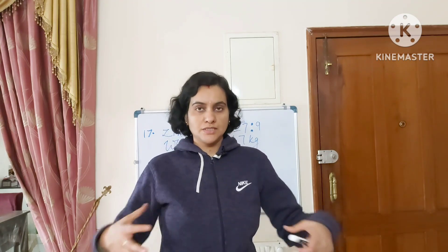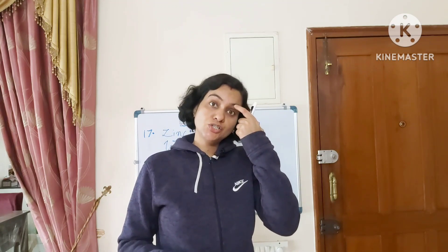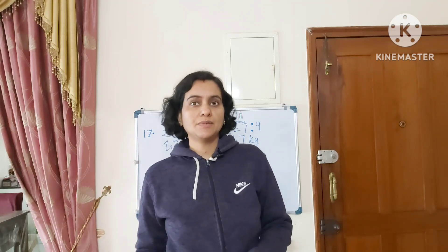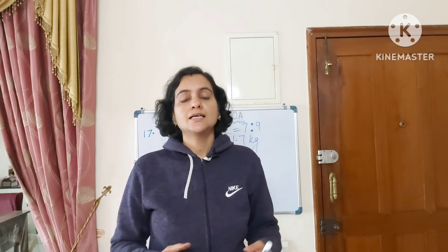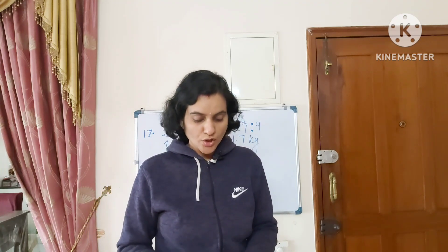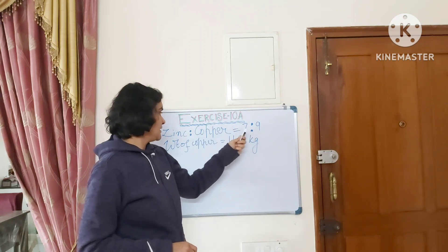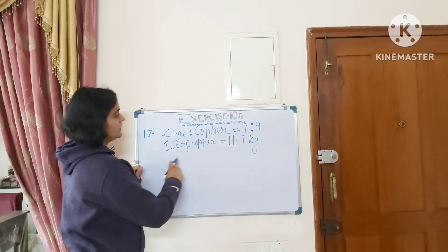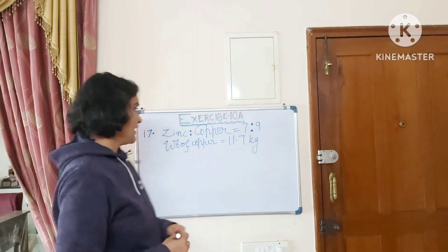Question number 17: the ratio of zinc to copper in an alloy is 7 to 9. An alloy is formed when we mix different metals in different ratios — for example, in gold jewelry, other metals are mixed in to provide strength and ductility.